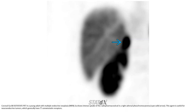This is a GA-68 DOTA-TATE PET in a patient with multiple endocrine neoplasia 2A, showing intense uptake of the radiopharmaceutical in the right adrenal pheochromocytoma. This agent is useful for neuroendocrine tumors, which generally have increased somatostatin receptors.